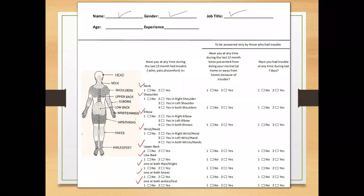Most of the questions have binary answers in the form of yes or no. For the neck, the answer could be no or yes. For the shoulder, it could be yes in the right shoulder, yes in the left shoulder, or yes in both shoulders — so if the answer is yes, it could be any one of these options.